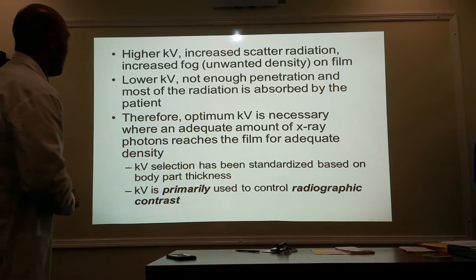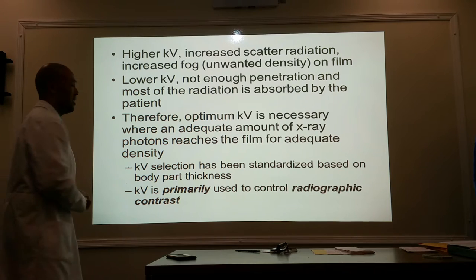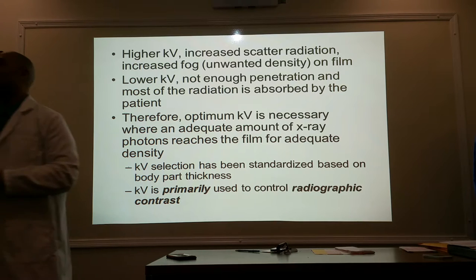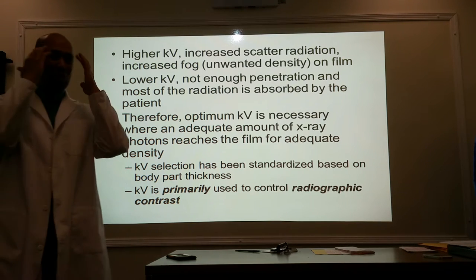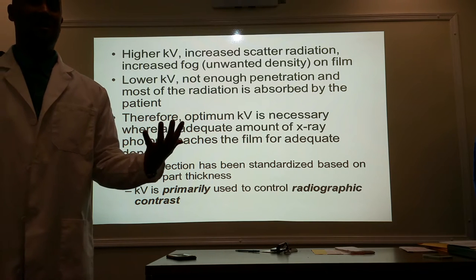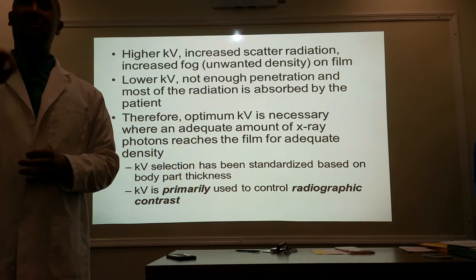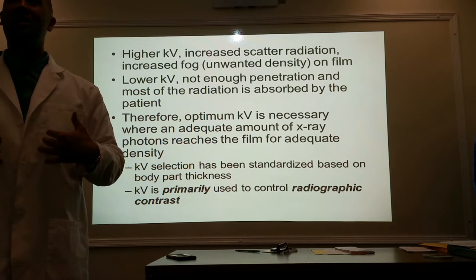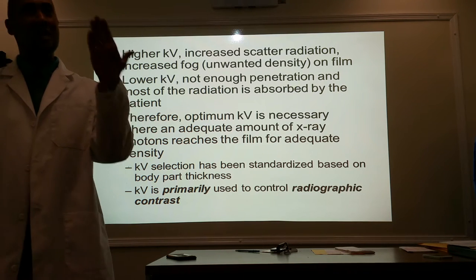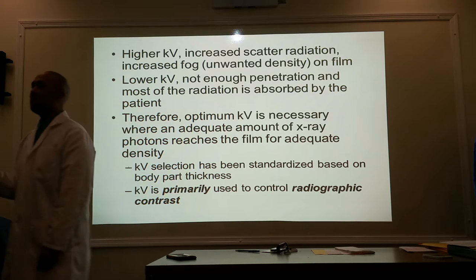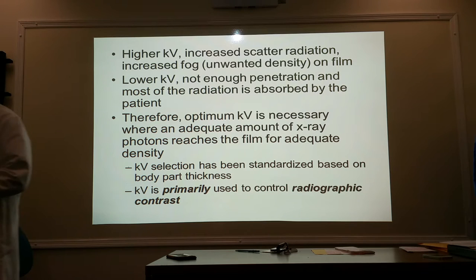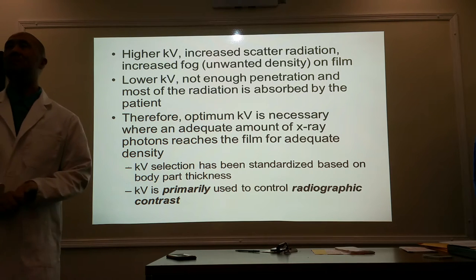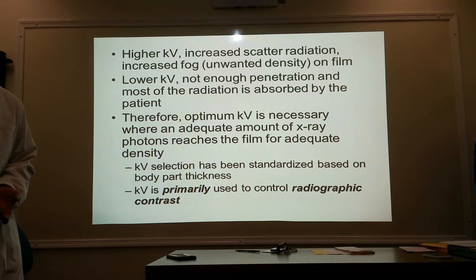At higher kVs, increased scattered radiation increases fog on the film. With lower kVs, it's not going to be enough to penetrate the body, and it's absorbed by the patient. This is where your knowledge on KV comes along. Too high — too dark, scattered radiation. Too low — mostly attenuated, bad for the patient. So we've got to find that happy KV. Therefore, optimum KV is necessary where an adequate amount of x-ray photons reaches the film for adequate density. KV selection has been standardized based on body part thickness.